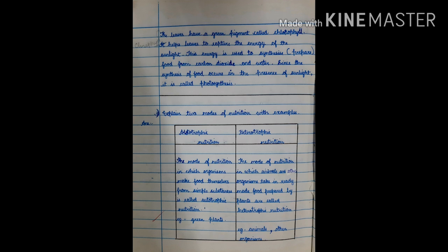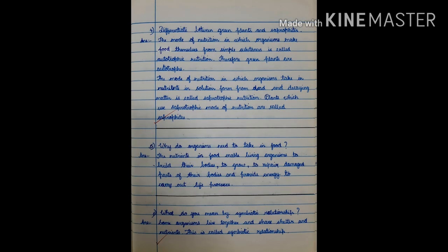Heterotrophic nutrition. The mode of nutrition in which animals and other organisms take in ready-made food prepared by the plants are called heterotrophic nutrition. Examples, animals and other organisms.